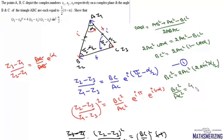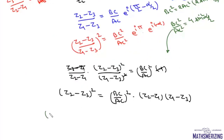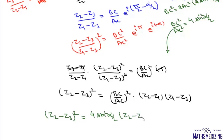We can also write BC squared equals 2 AC squared times 2 sine squared alpha by 2, so BC squared upon AC squared equals 4 sine squared alpha by 2. Substituting this value into the expression gives z2 minus z3 whole squared equals 4 sine squared alpha by 2 times z2 minus z1 times z1 minus z3, which is what we needed to prove.